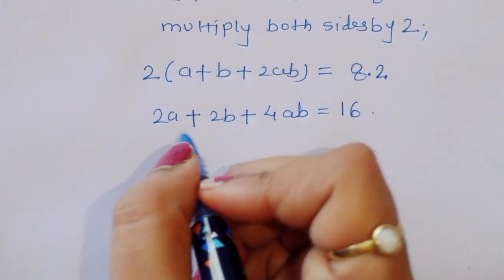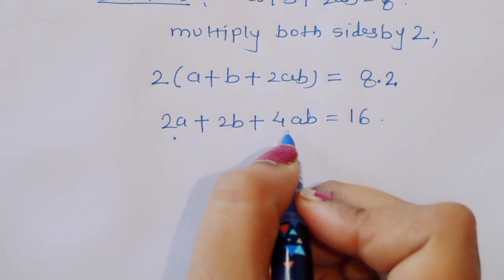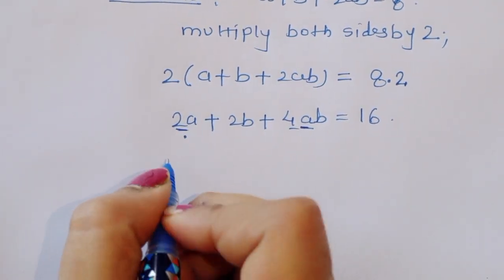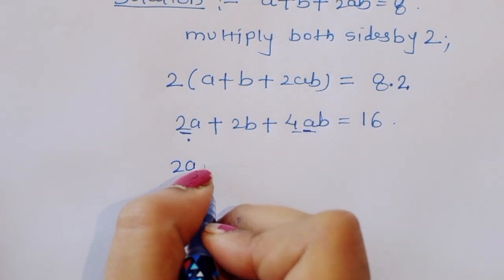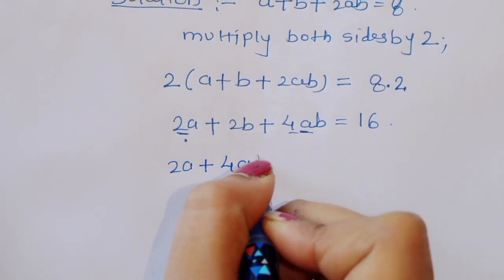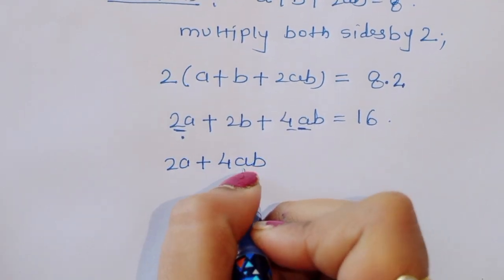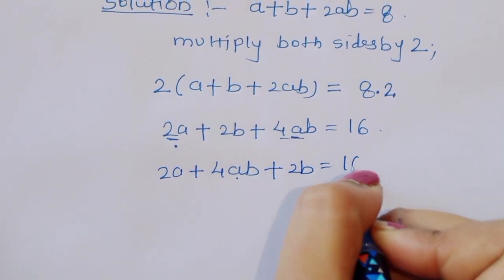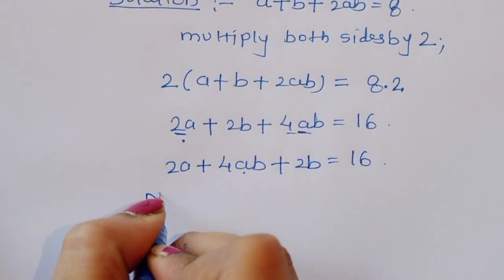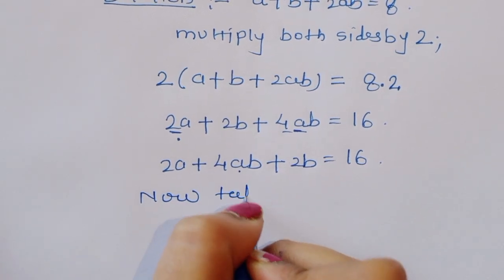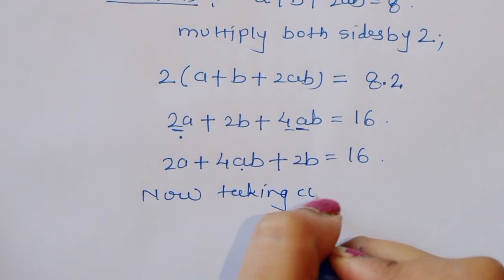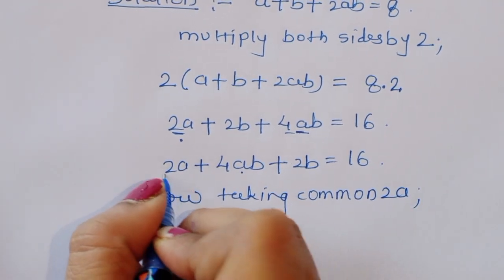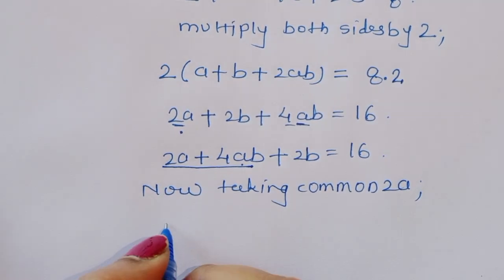Now we can take common from 2a plus 4ab. First we have to arrange this term: 2a plus 4ab plus 2b is equal to 16.